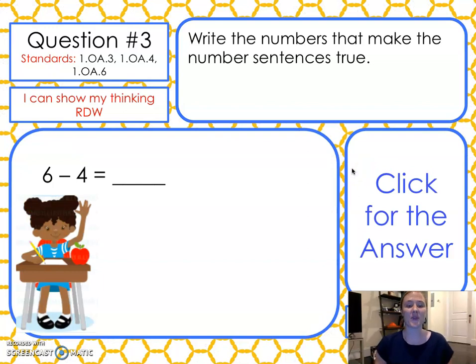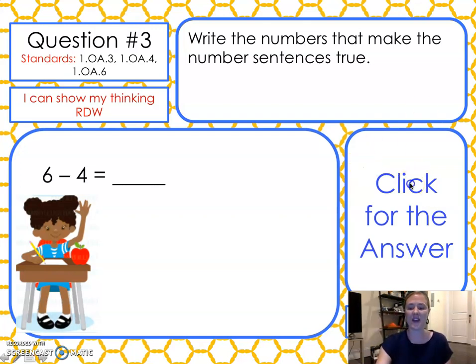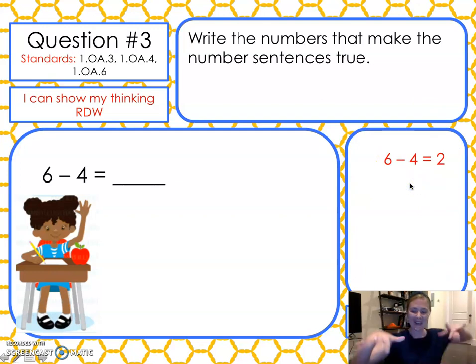Question number three. Use the numbers that make the number sentences true. Six takeaway four is... This one, you won't need to pause. I'm sure you know this automatically. Six takeaway four is two. Good work.